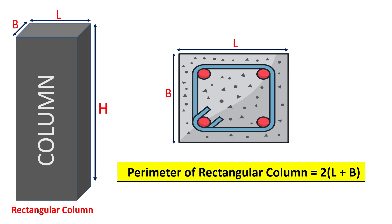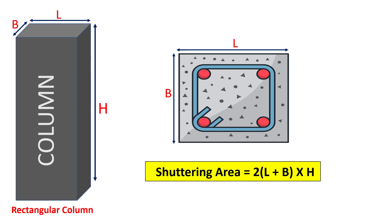Next up, we have the rectangular column. The perimeter is calculated by adding twice the length and twice the width of the column. If l is the length, b its width, and h its height, then the formula for shuttering area of a rectangular column is: shuttering area = 2(l + b) × height.